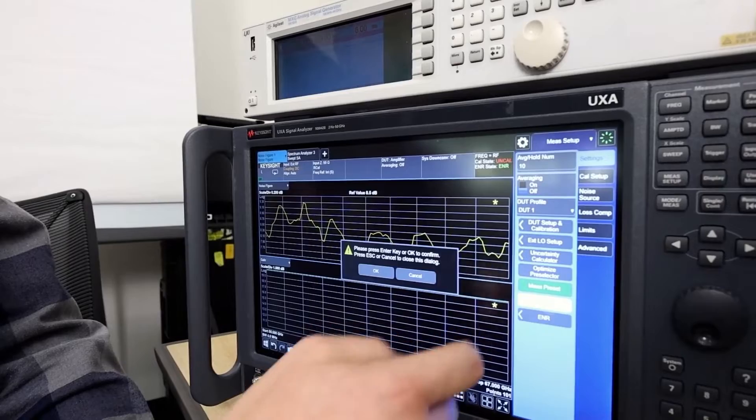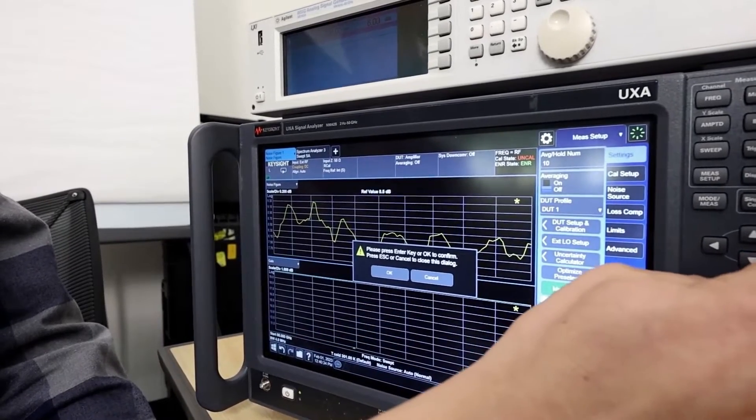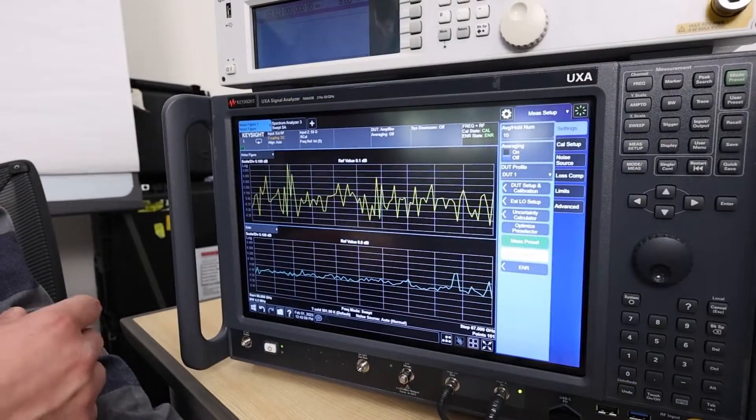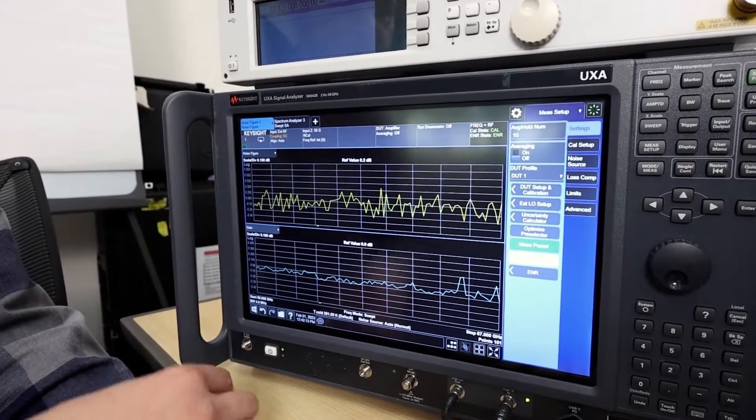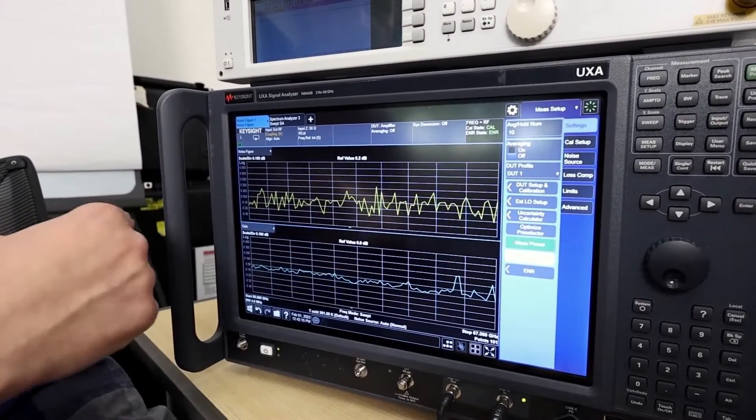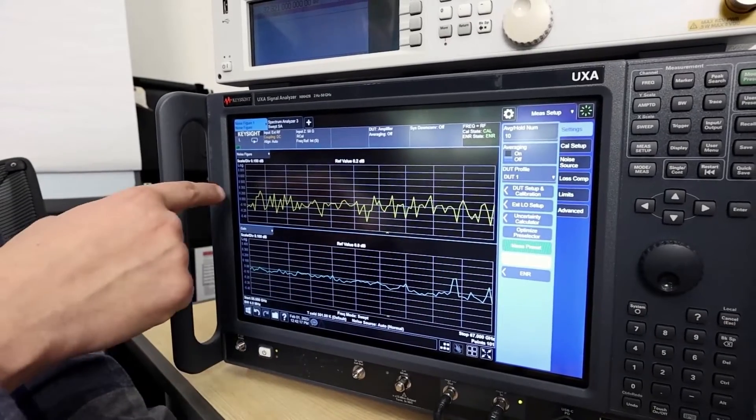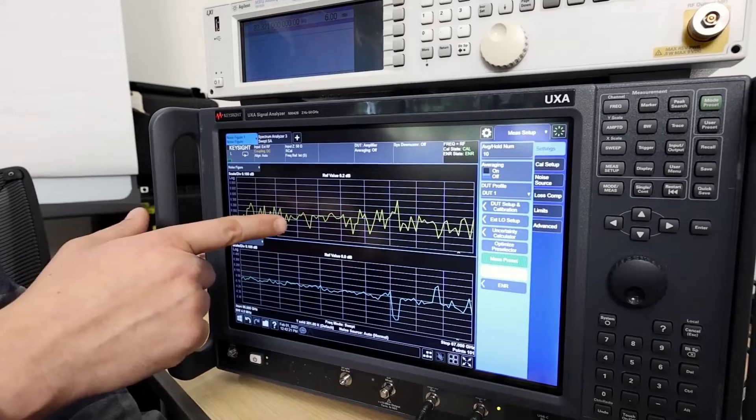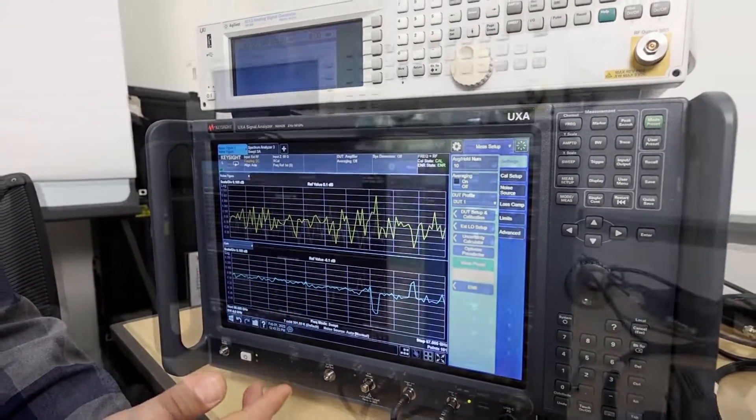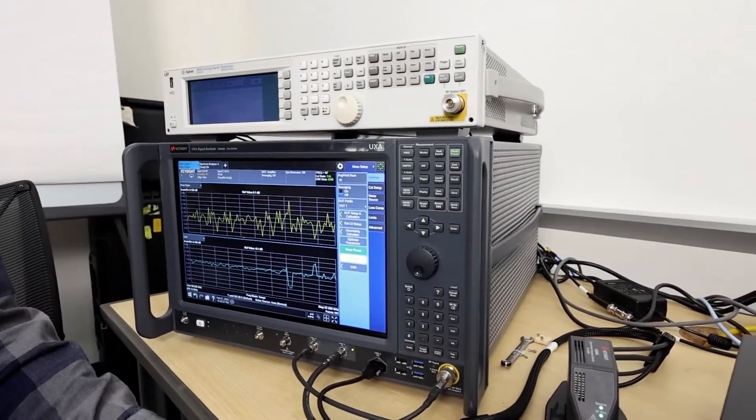So I'll go ahead and calibrate. Now we've calibrated. We have the auto coupled scale. So we see around zero dB for our noise figure and zero dB for the gain, which is what you would expect for a good calibration.